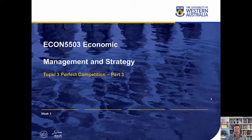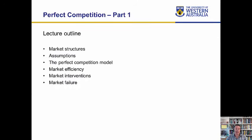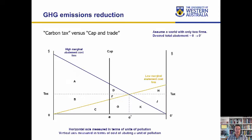Welcome to part three of topic three, perfect competition. In this presentation we're going to continue on with market failure, and in particular we're going to look at a carbon tax versus a cap and trade. This is a quite advanced extension of what we've been doing in terms of competitive markets.